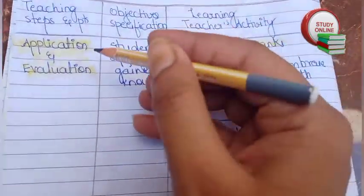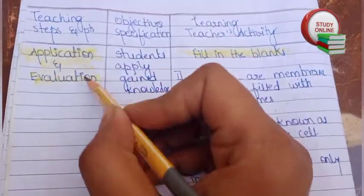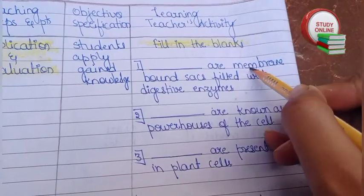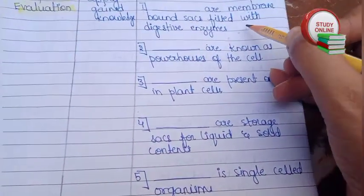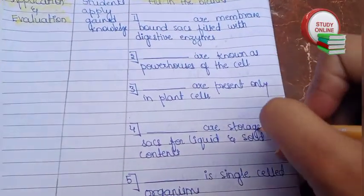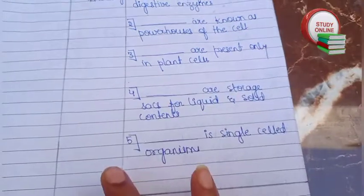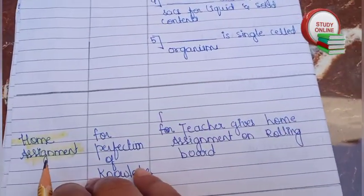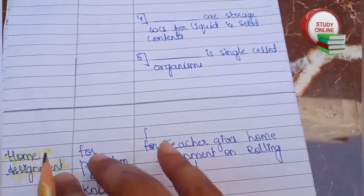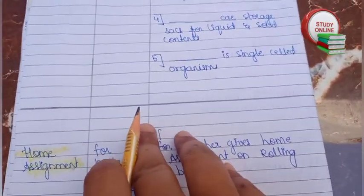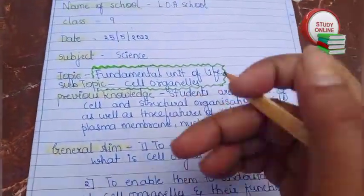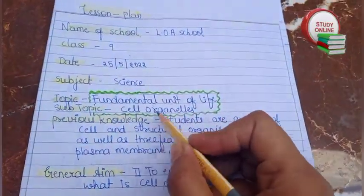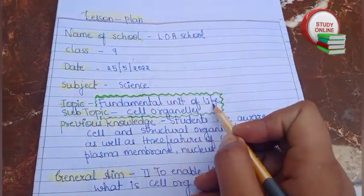Last page: application and evaluation. Here you can see fill in the blanks — I have added five fill-in-the-blank questions. And lastly, the home assignment: for perfection of knowledge we have to give a home assignment to students. So this was my lesson plan on the topic cell organelles, fundamental unit of life.